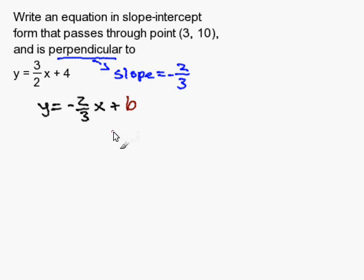To solve for b, what you need to do is substitute in the x and y values given, because the line passes through the point (3,10). So for y, I'm going to substitute in 10, and for x, I'm going to substitute in 3.